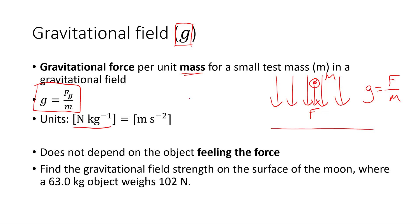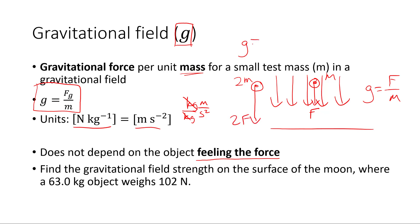Because a newton is a kilogram meter per second squared, a newton per kilogram is just a meter per second squared. So the units for g field are either newtons per kilogram or meters per second squared — the same as the units for acceleration. Importantly, g field does not depend on the object feeling the force. If we place an object with twice the mass, 2m, it feels twice the force, 2F, so g equals 2F over 2m — the same g field. So g field is independent of the object feeling the force; it tells us about the force around an object but doesn't give the actual force on any specific object.